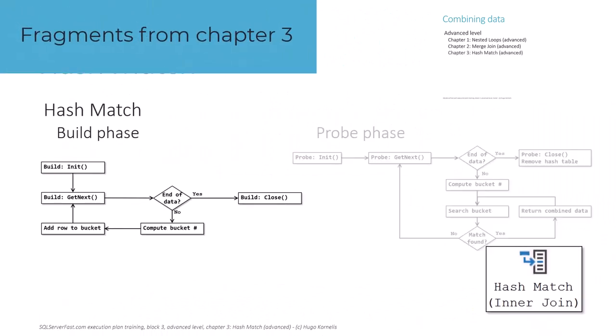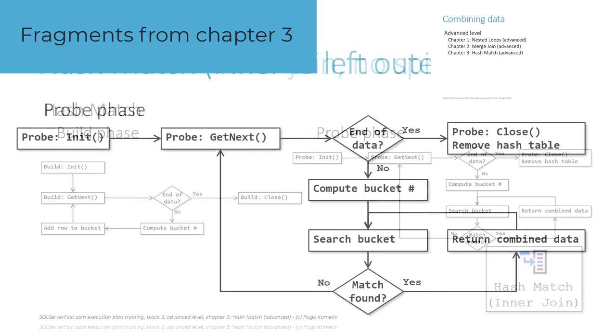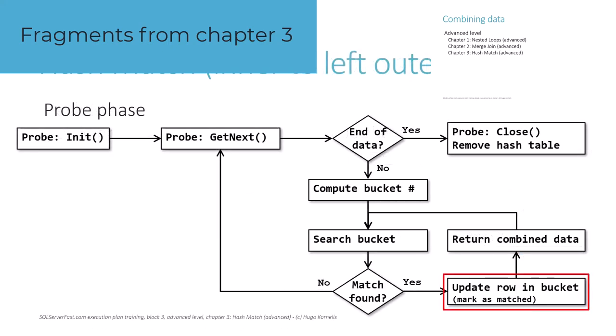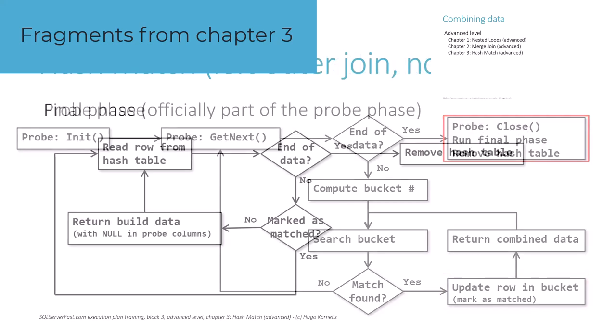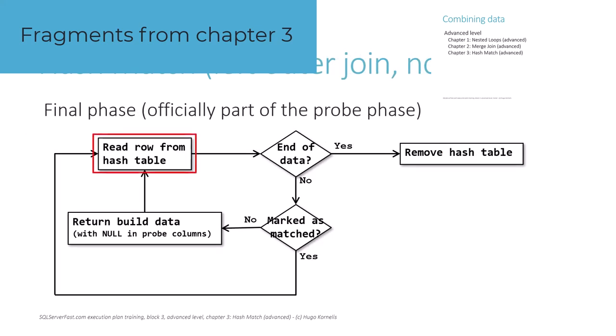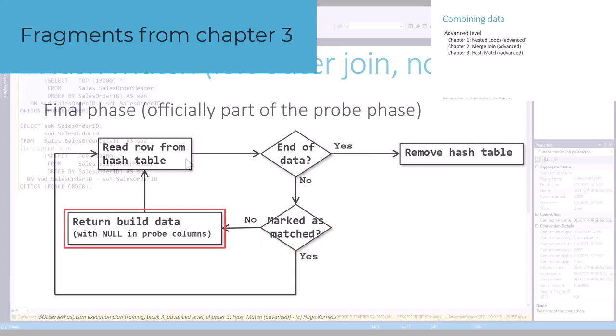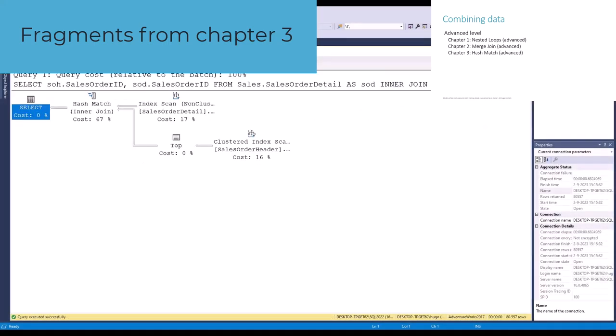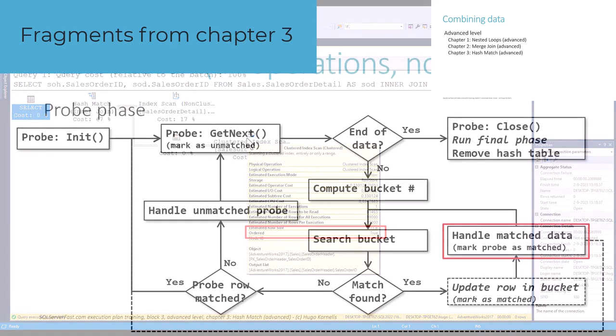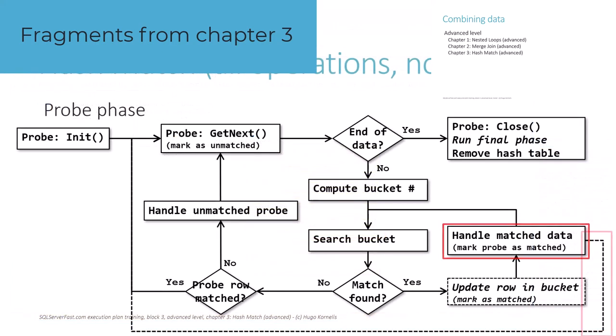The hash match operator is covered in chapter 3. Both the build phase and the probe phase need to be modified a bit to add support for other logical operations. In some cases we even need to use a third phase called the final phase. For each of these three phases we show flowcharts to support each join type and then combine these to show the actual operator logic.